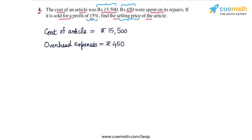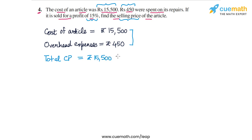The total cost price of this article will be obtained by adding these two values, because overhead expenses have to be included in the cost price. So the total cost price is rupees 15,500 plus rupees 450, which equals rupees 15,950.